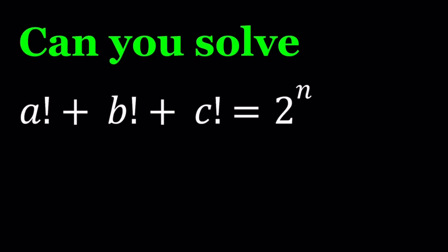Hello everyone. In this video, we're going to be solving a nice number theory problem. We have a factorial plus b factorial plus c factorial equals 2 to the power n, where a, b, c, and n are positive integers. We're going to be looking for all a, b, c, and n values.